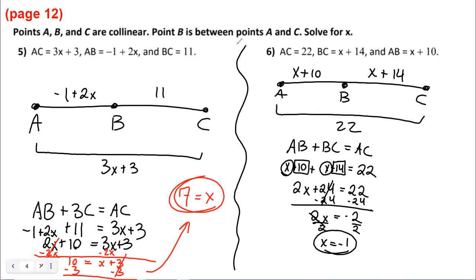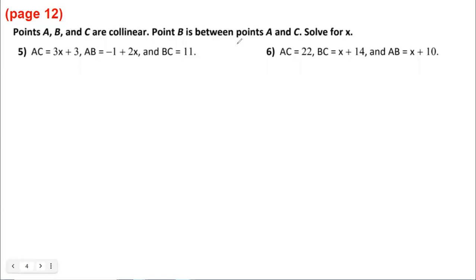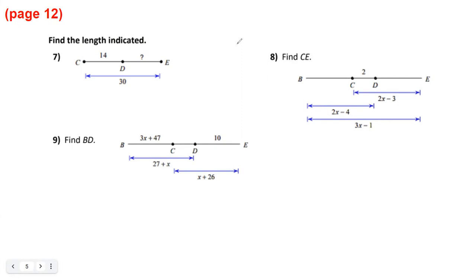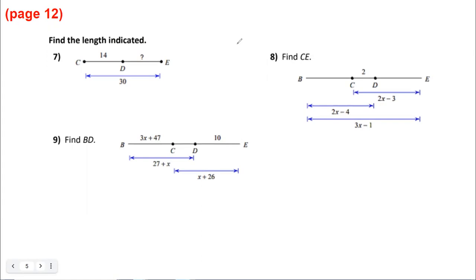We're on page 12 now. Problem seven is straightforward: if the whole thing is 30 and CD is 14, then the other part must be 16, since 16 and 14 make 30. Problems eight and nine are a bit more involved, so let's take time to do those now.